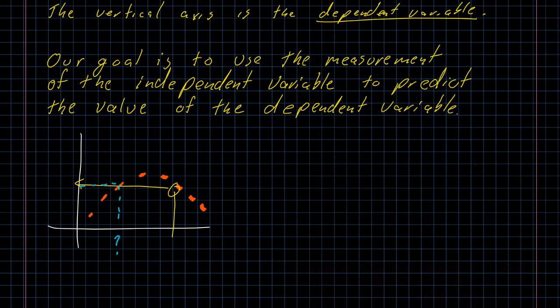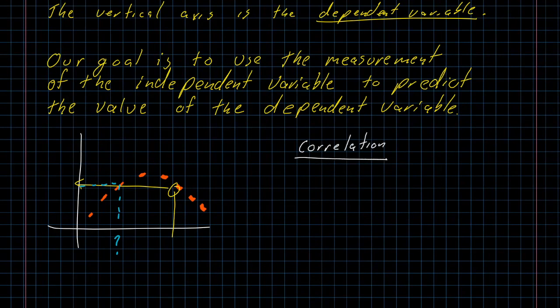Now we have some data, we have created a scatterplot, and we want to start looking at this question. Can we use the data that we have to take the value of the independent variable and use it to predict the value of the dependent variable? The idea behind this is known as correlation.